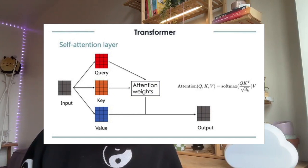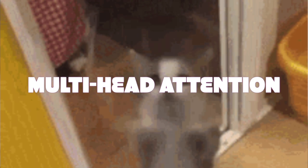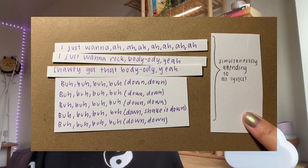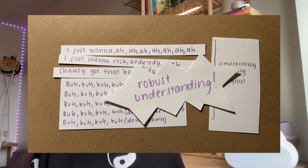The transformer introduced the concept of self-attention, which allows the model to selectively focus on different parts of the input rather than processing the entire sentence in a sequential manner. This is done by computing a set of attention weights, which indicate the importance of each part of the input when predicting the next word. The transformer also introduced multi-head attention, which allows the model to attend to multiple different parts of the input simultaneously, enabling it to learn different types of relationships between the input, leading to a more robust understanding of language.